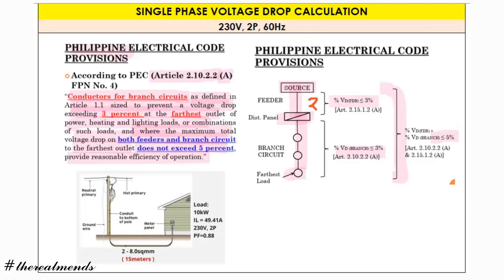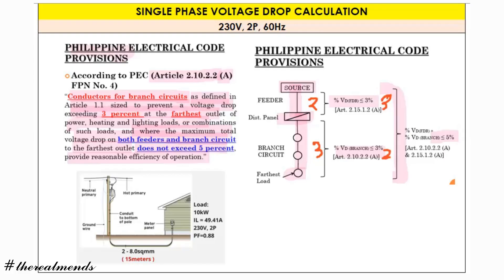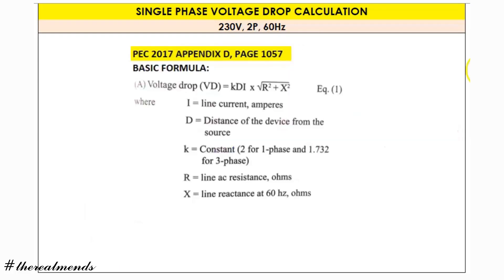A simple analogy: you could use two percent on the branch circuit and three percent on the feeder, totaling five percent. Or three percent on the feeder and two percent on the branch circuit — the result is still five percent. That is the provision of the Philippine Electrical Code. Now, before we proceed, we have a formula for computing voltage drop, coming from PEC 2017 Appendix D, page 1057.